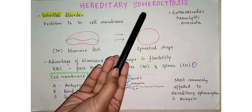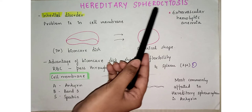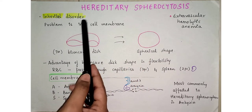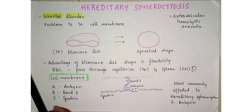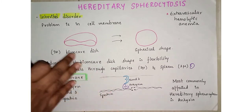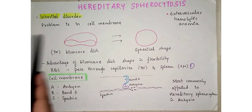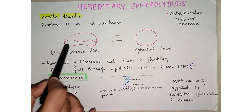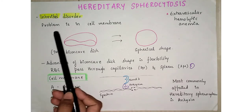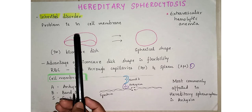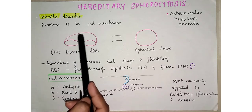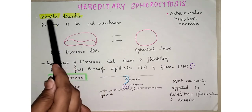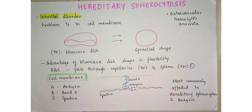Hereditary Spherocytosis is an inherited disorder of RBCs. In this hemolytic anemia, the main problem is with the RBCs — specifically, the problem is in the cell membrane. Whatever cause occurs is because there is some problem in the cell membrane.